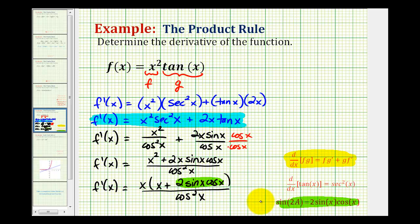So we can perform a substitution by using this double angle identity for sine. So let's go back up here. F prime of x would be equal to x times x plus sine two x all over cosine squared x.